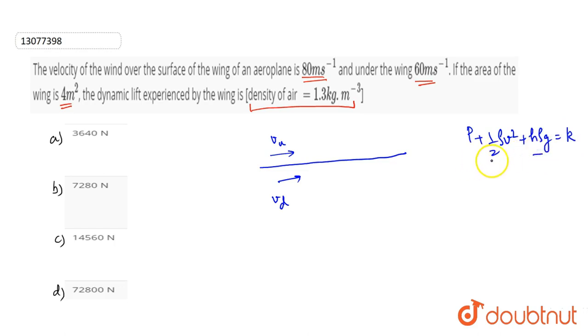If the velocity increases, the pressure decreases. This means the upper pressure is less than the lower pressure, because the upper velocity is higher. This pressure difference creates the lift force.